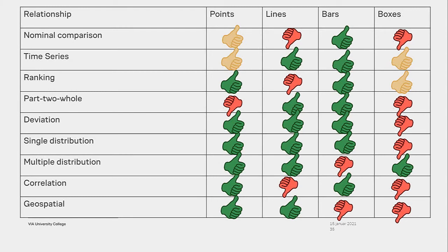This slide shows the suggested value encoding object for the type of relationship, according to Stephen Few in his book Show Me the Numbers.